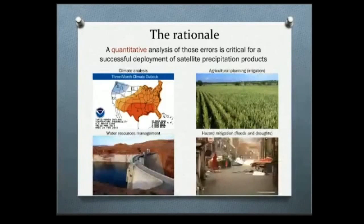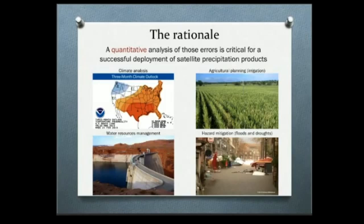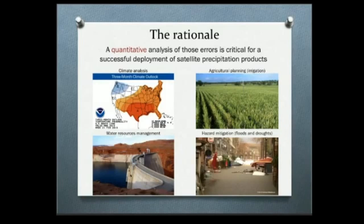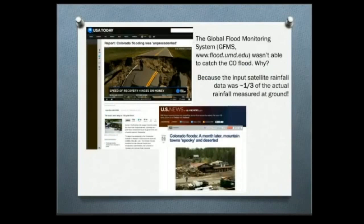Errors associated with precipitation measurements are fundamental for climate analysis, agricultural planning — we need water for irrigating fields — water resources management, and hazardification. When we talk about floods and droughts, precipitation is the guide. This is a picture from Catania in Sicily, Italy, from last year — another example of how important this project is.